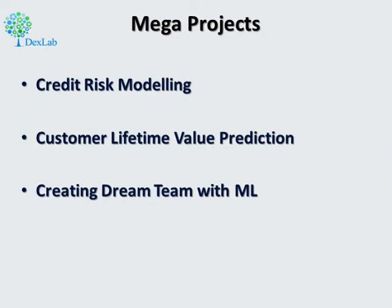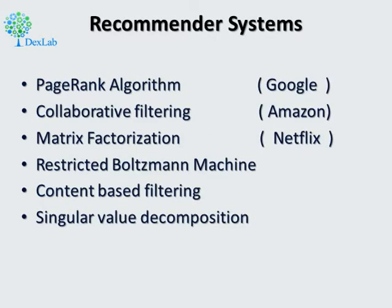The machine learning part ends and we move to deep learning. In between, there is an important section on recommender systems — more of an art than machine learning or deep learning. We learn the page rank algorithm (Google's), Amazon's collaborative filtering, matrix factorization used by Netflix, and the restricted Boltzmann machine. We cover all kinds of recommender systems: content-based filtering, singular value decomposition, and everything — a very comprehensive and broad section.